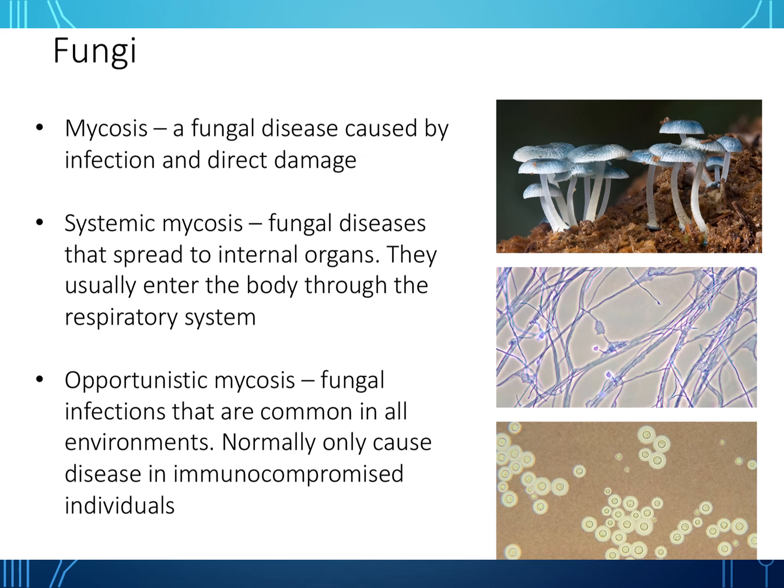What does immunocompromised mean? An immunocompromised individual is someone whose immune system is weak and doesn't function normally. This may be due to diseases such as leukemia, HIV, or rheumatoid arthritis — conditions where the immune system is compromised.